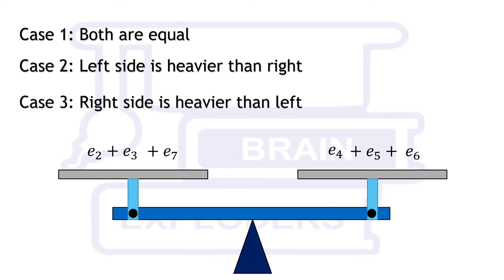If both the sides are equal then either it is a rumor or first or eighth elephant has lost its mass. If left side is heavier than right then one of the elephant on right side has lost its mass. Similarly if right side is heavier than left then one of the elephants on left has lost its mass.